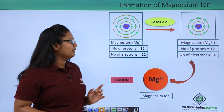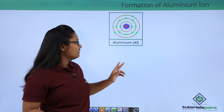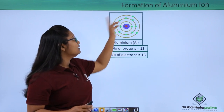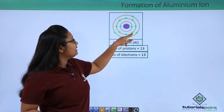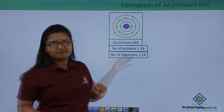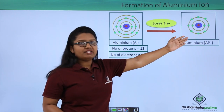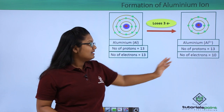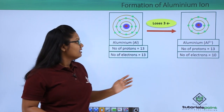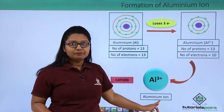Now let us see ion formation in aluminium. A neutral aluminium atom has 13 protons and 13 electrons which exactly nullify each other. The two inner shells are completely filled, but there are three extra electrons in the outer shell. This aluminium atom loses these three extra electrons, leaving it with three extra protons.